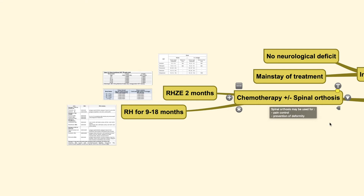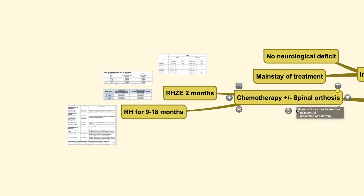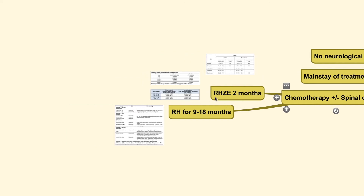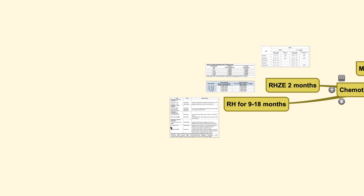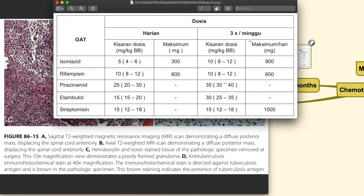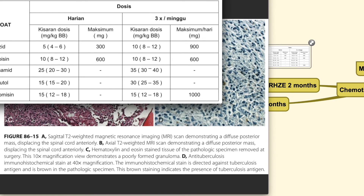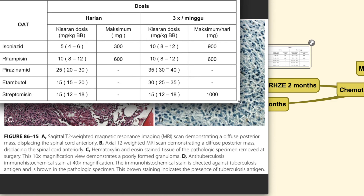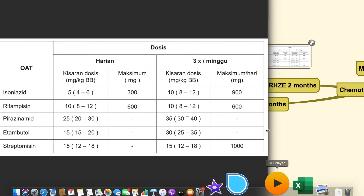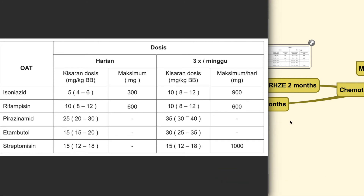Beware of the side effects of using spinal orthosis: because the orthosis takes over muscle function, prolonged use is definitely not recommended as it could lead to back muscle atrophy. The standard chemotherapy regimen includes four drugs — rifampicin, isoniazid, pyrazinamide, and ethambutol — given for two months, followed by rifampicin and isoniazid for around seven months, for a total of nine months. This can be prolonged based on the patient's condition and follow-up culture results.